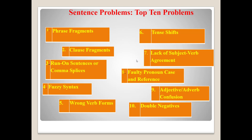Second, clause fragments: a dependent clause must always be connected to an independent clause. If you begin a sentence with a subordinating conjunction such as when, because, or although, connect that clause to an independent clause. Faulty: 'The play failed. Because it received three bad reviews.' Revised: 'The play failed because it received three bad reviews.' Third, run-on sentences or comma splices: separate or revise independent clauses that are run together. Faulty: 'He trained hard, he never considered the strain.' Revised: 'He trained hard; he never considered the strain.'